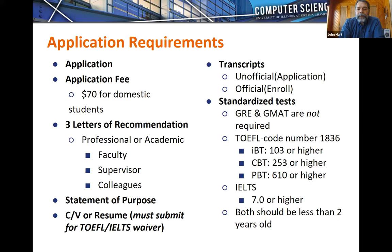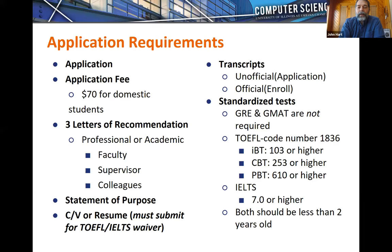The most important thing in your application is your transcripts. Make sure you identify the name and number of classes you've taken for data structures, algorithms, programming, and object-oriented programming clearly in the application so we can find them easily in your transcript. Letters of recommendation generally don't factor into the admissions decision — they're mostly used for MS or PhD programs where we're pairing students with an advisor and looking for research potential.